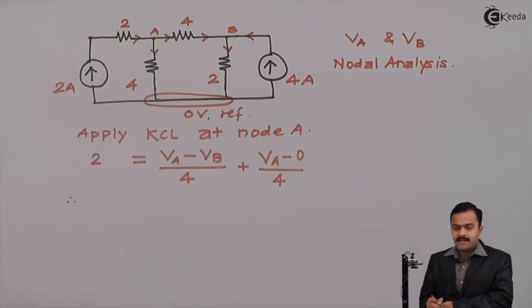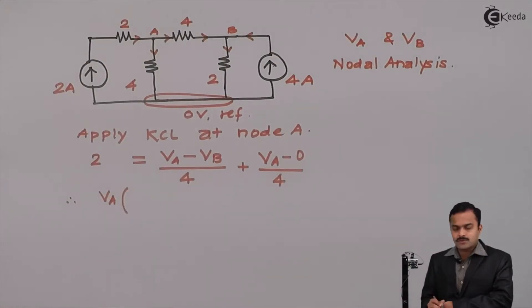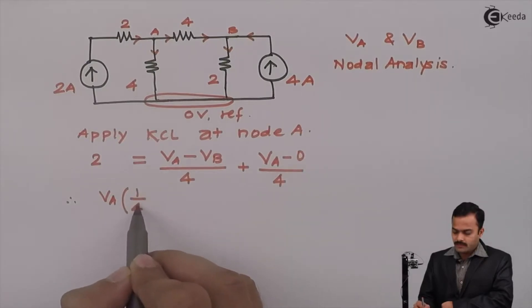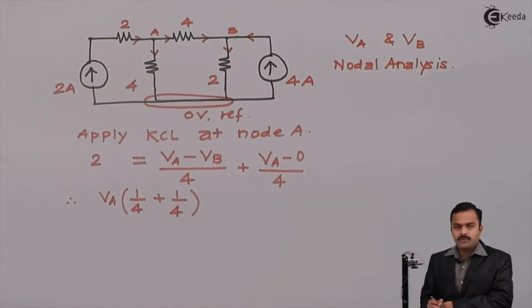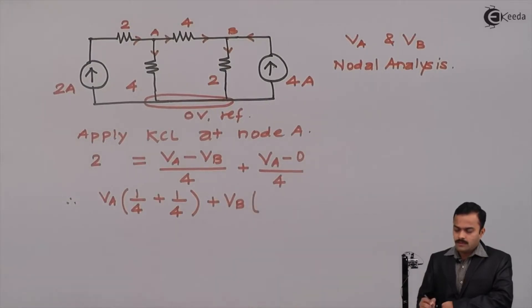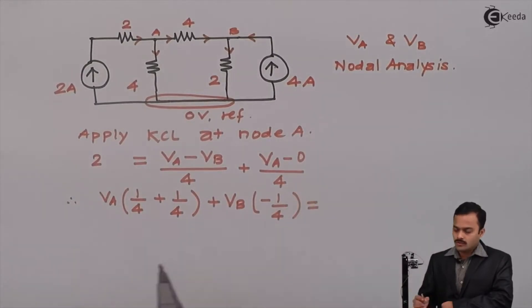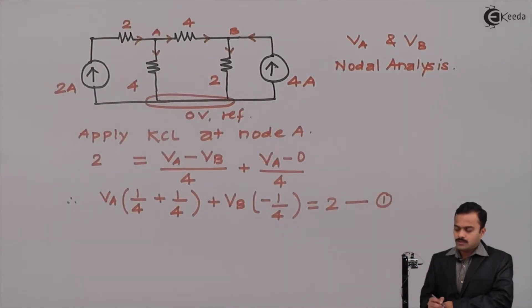So I will rearrange the terms properly meaning I will club all VA terms together. So VA coefficient is 1 by 4 and one more 1 by 4 term will be there. VB only one coefficient I will have and that is minus 1 by 4 equal to constant which is 2. So this will be equation number 1. Similar way we can apply KCL at node B.